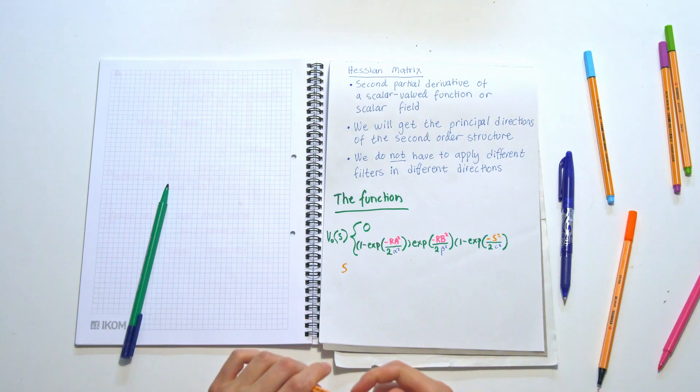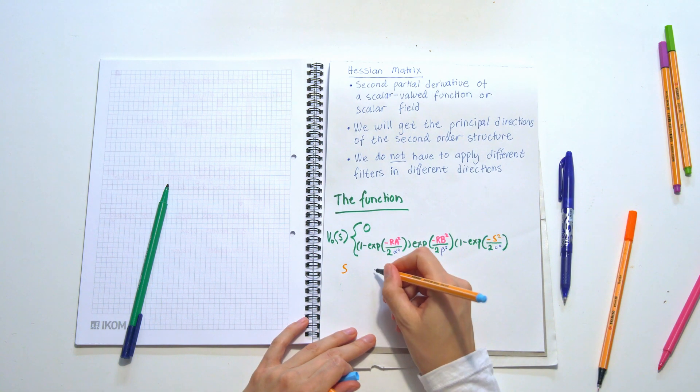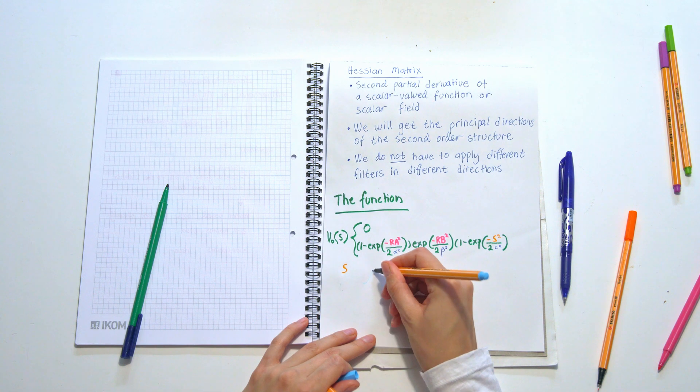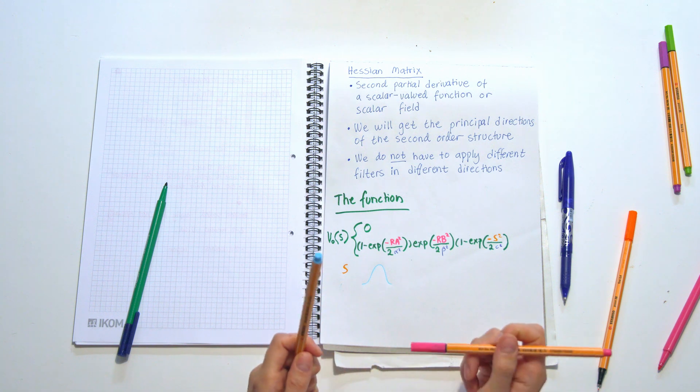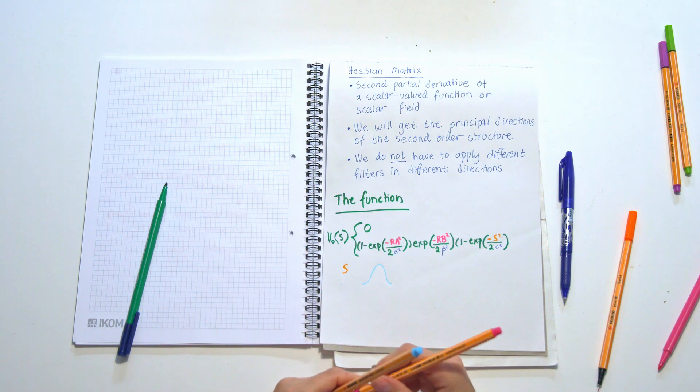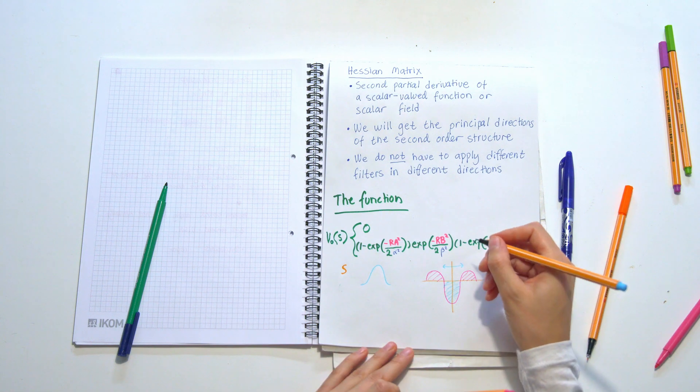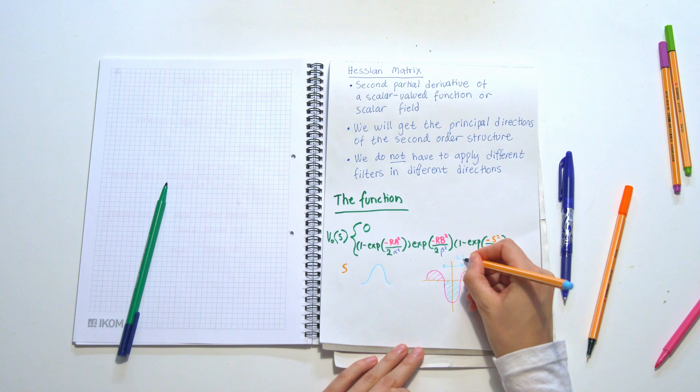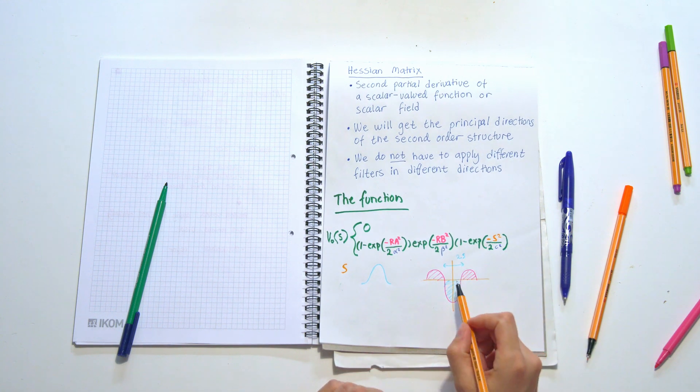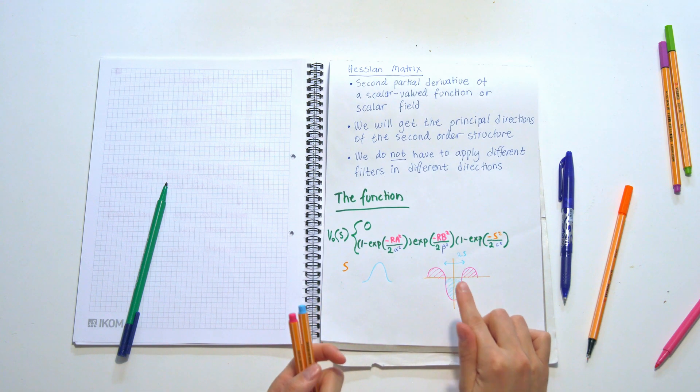If you remember in the previous videos we talked about the Gaussian curve that looked like a bell curve. The second order derivative of a Gaussian kernel looks a bit different. This part here is actually 2S wide, so it goes from minus S to S.